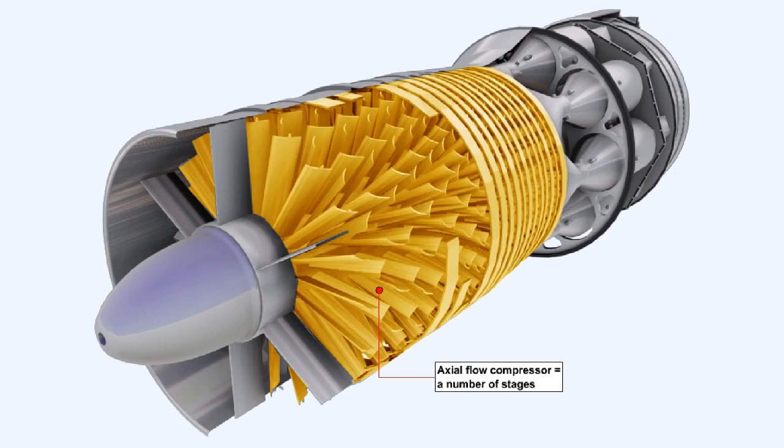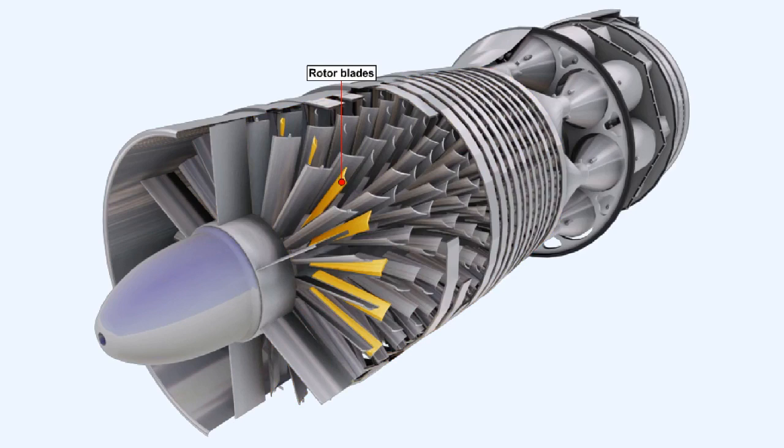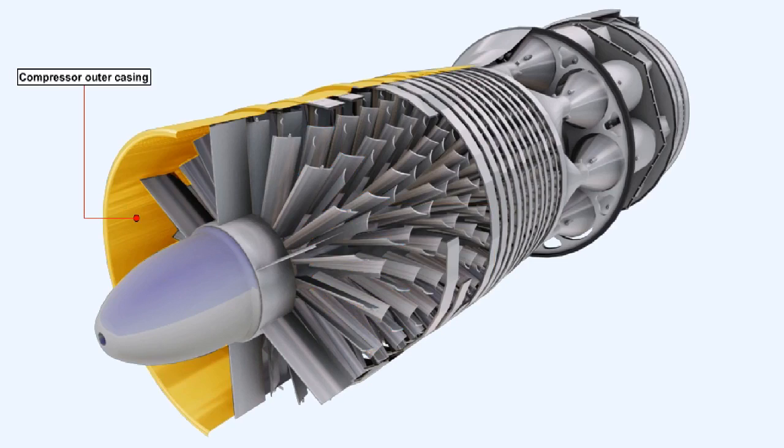The axial flow compressor, an example of which is shown here, consists of a number of stages. A stage embodies one row of rotor blades of airfoil section, which are fastened to a disk, followed by one row of stator vanes, also of airfoil section. The stator vanes are fastened to the compressor outer casing.